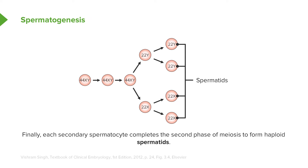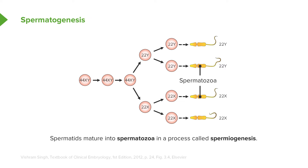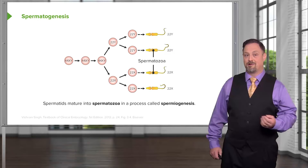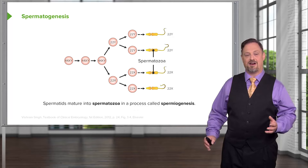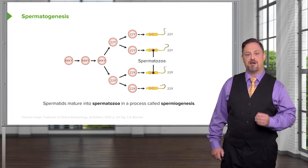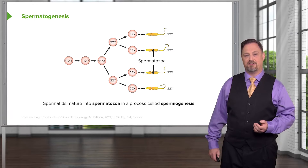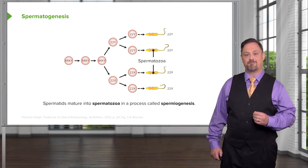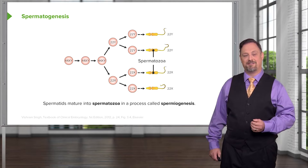These spermatids are not yet capable of fertilizing an egg. For that to happen, they need to mature into spermatozoa, and that process is called spermiogenesis. Recall that spermatogenesis is the entire process, whereas spermiogenesis is the process by which a spermatid becomes a spermatozoa.